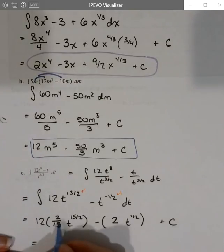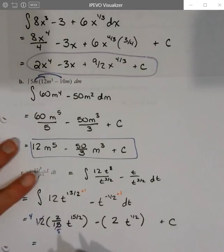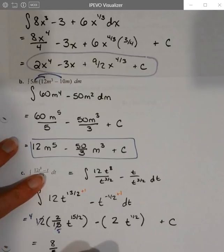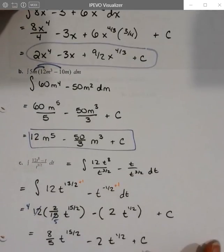So that gives us 5 and 4. So it looks like we're going to end up with 8 fifths t to the 15 halves minus 2 t to the 1 half plus c. There we go.